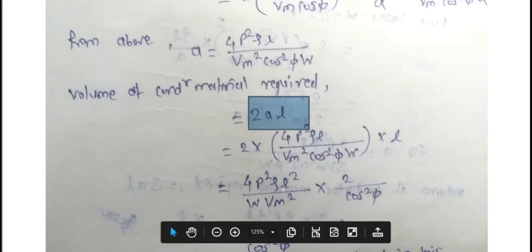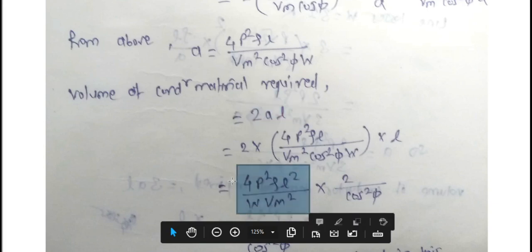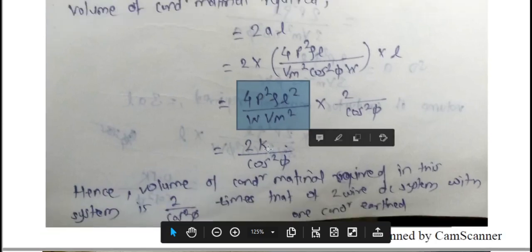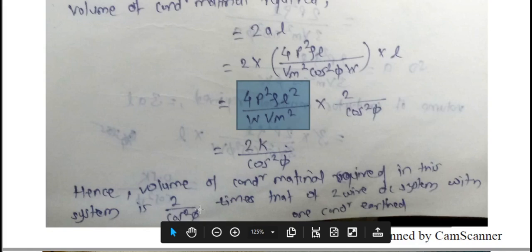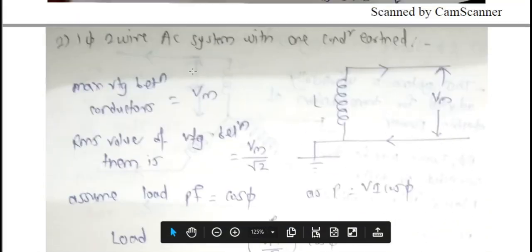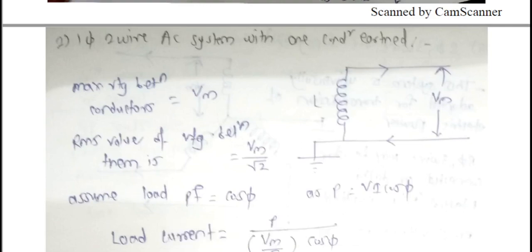Solving this equation, the volume becomes 8P²ρl² / (W·Vm²·cos²φ). Since we previously defined K = 4P²ρl² / (W·Vm²), this becomes 2K / cos²φ. Hence the volume of conductor material required in this single phase two wire system with one conductor earthed is 2/cos²φ times that of the two-wire DC system. I hope you understood the concept of comparison on the basis of volume of conductor. Thank you, God bless you all.